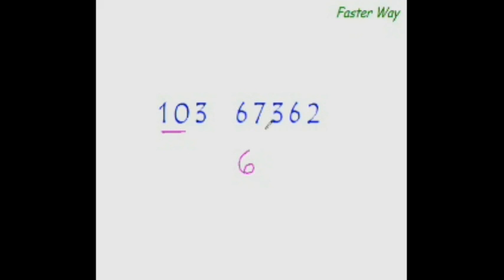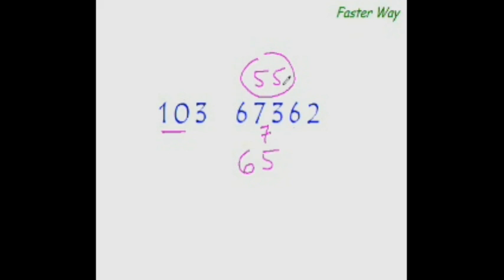The next dividend would be 73 minus the product of the unused digit times the answer digit. So 73 minus 18 gives us 55. How many times does 10 go into 55? 5 times is 50, so write 5 here and the remainder is 5. Our new dividend would be 56 minus 3 times 5, which is 15, so 56 minus 15 is 41.